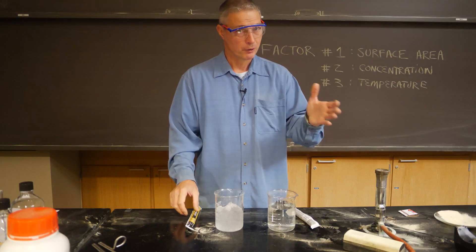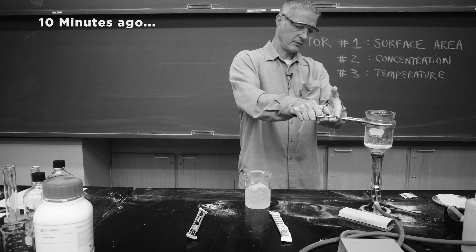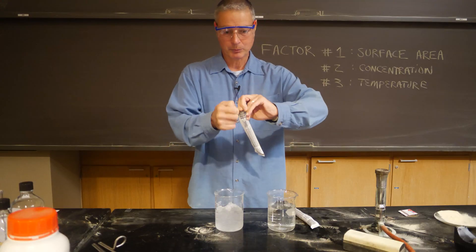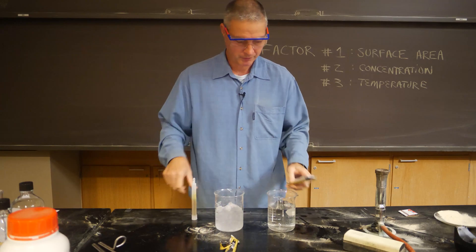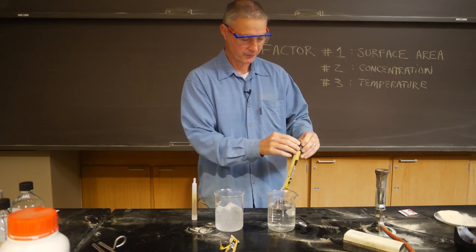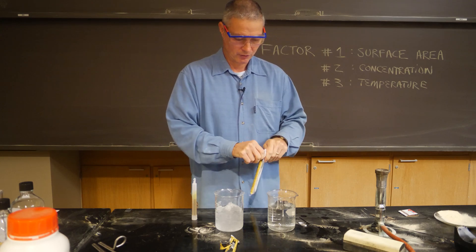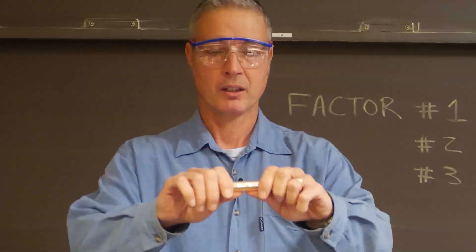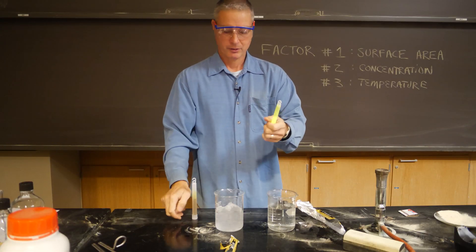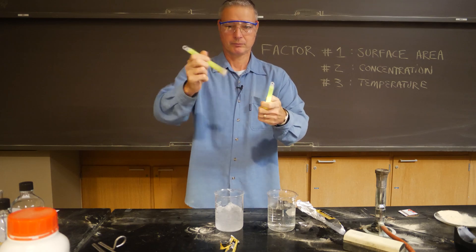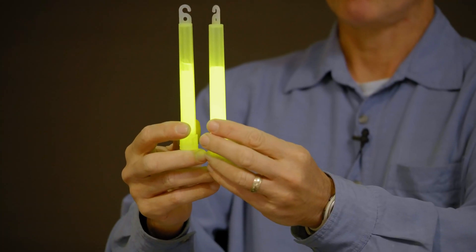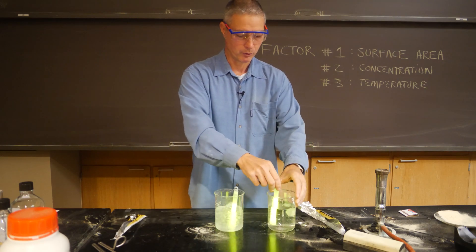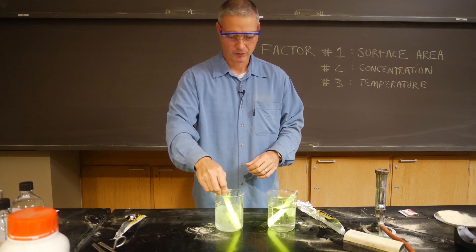This is actually something you can do at home if you're careful. These are glow sticks — little things you use at night when you're camping or whatever. There's a reaction in there that is similar to what goes on in a lightning bug's abdomen. When you break these, the reaction starts. I'm going to start them both at the same time — they're about equal brightness — but I'm going to take this one and put it in cold water, and this one in the warm water, and we'll see what happens.